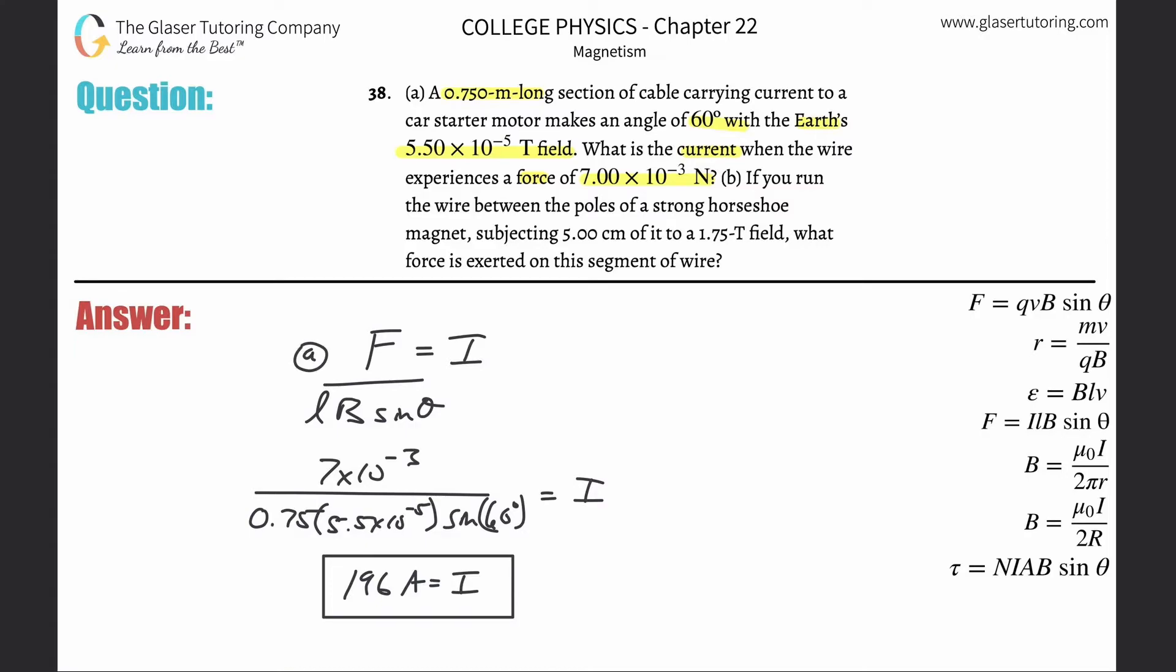Letter B: If you run the wire between the poles of a strong horseshoe magnet, subjecting 5 centimeters of it to a 1.75 Tesla field, what force is exerted on this segment of wire?